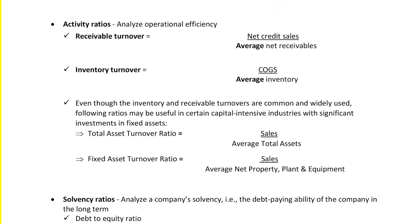Receivables turnover ratio: numerator is net credit sales; denominator is average net receivables — net meaning adjusted for any allowance for uncollectibles. Inventory turnover ratio: numerator is COGS; denominator is average inventory, because we turn it over.